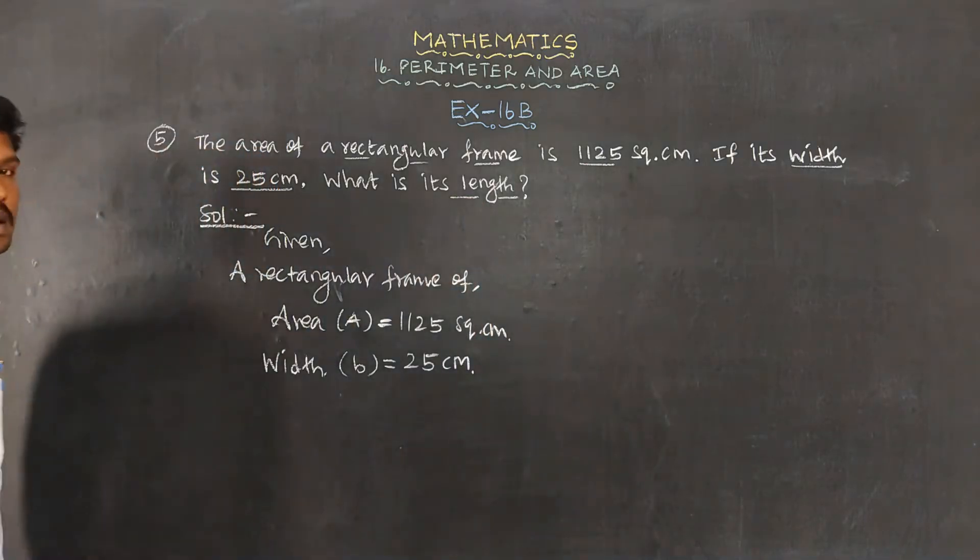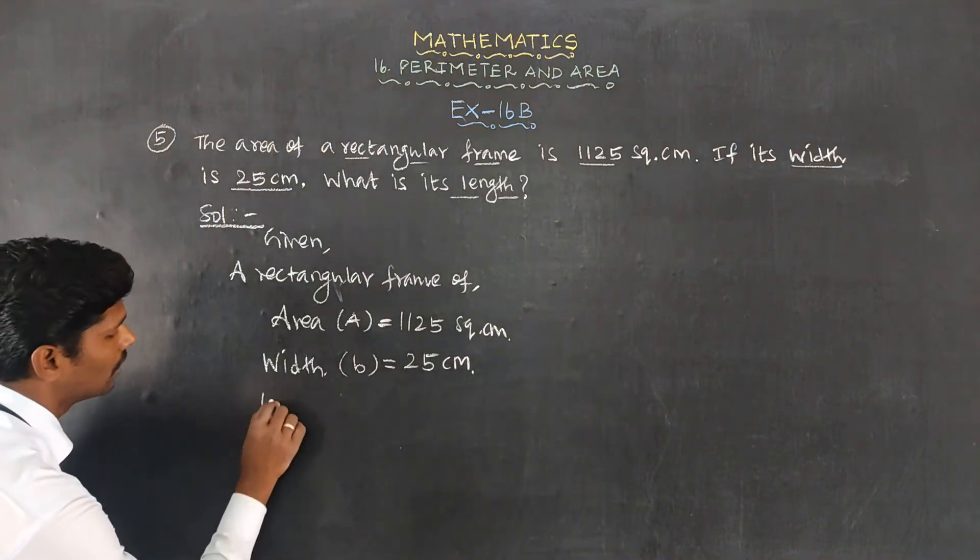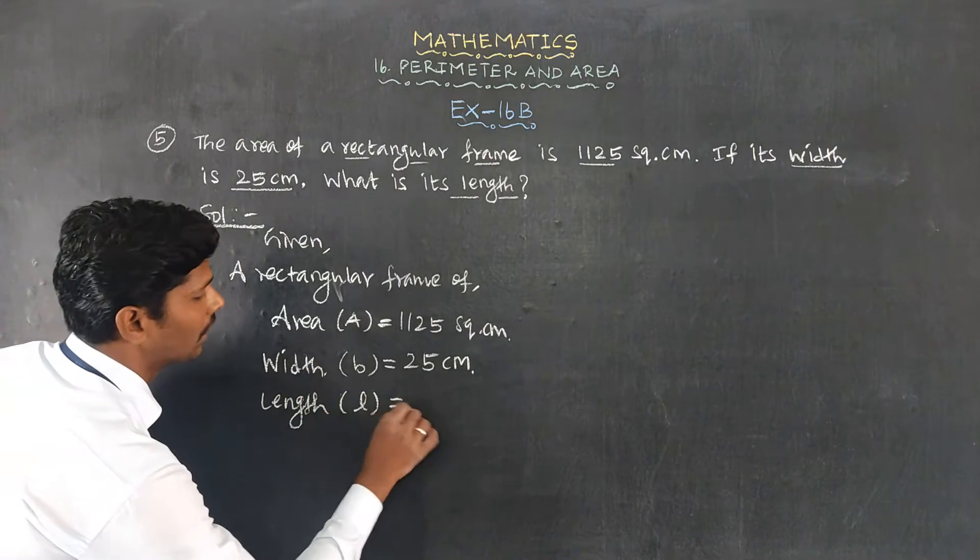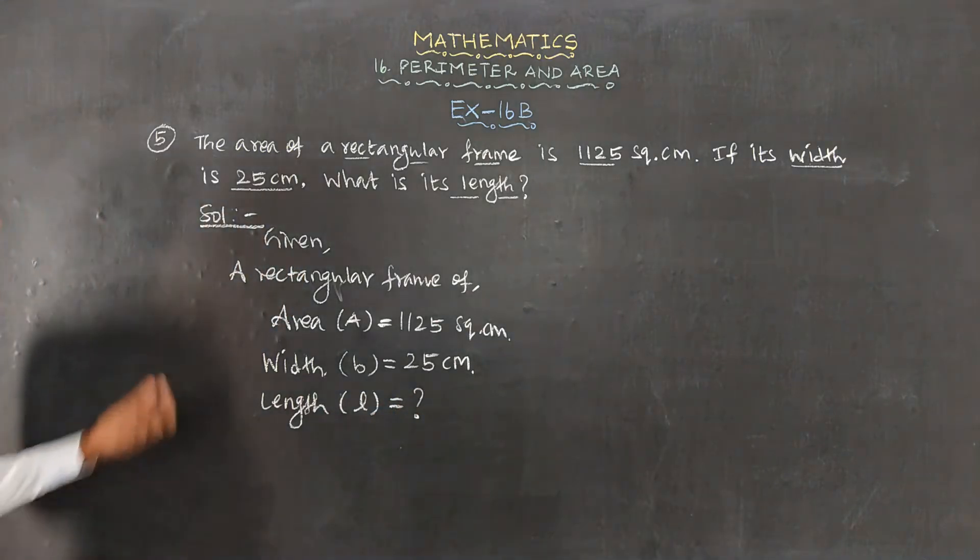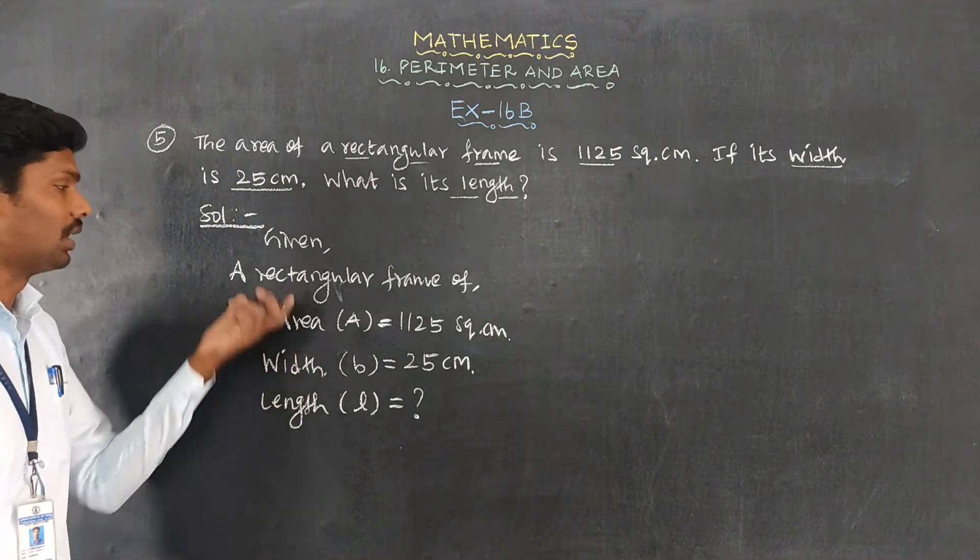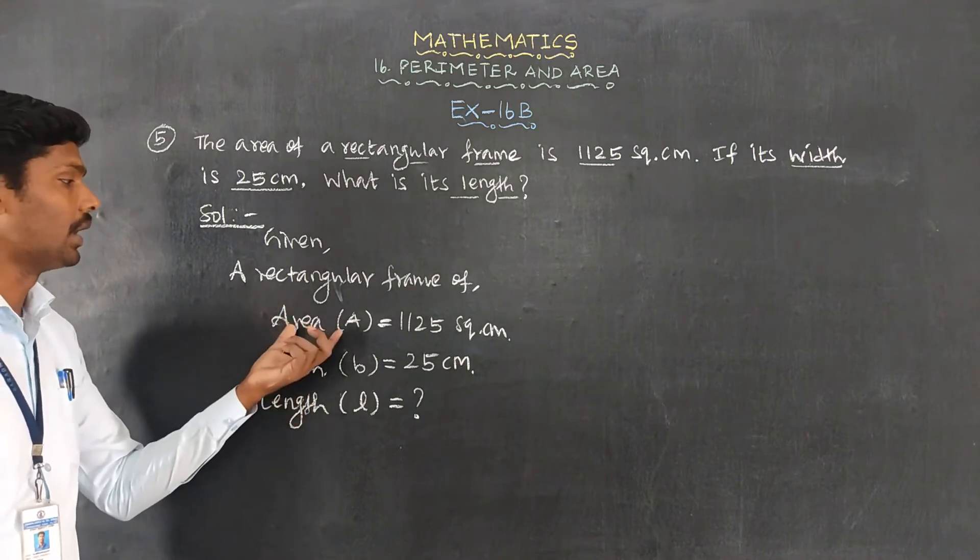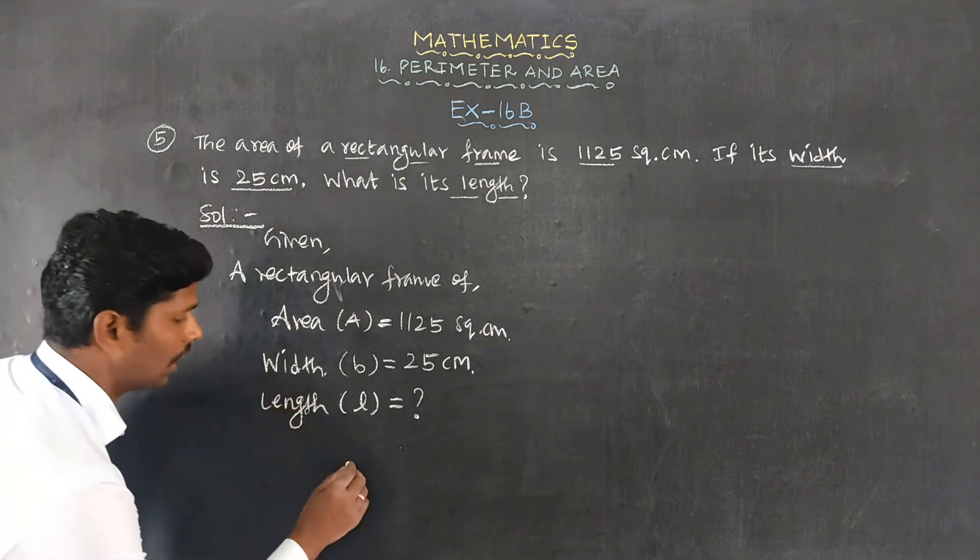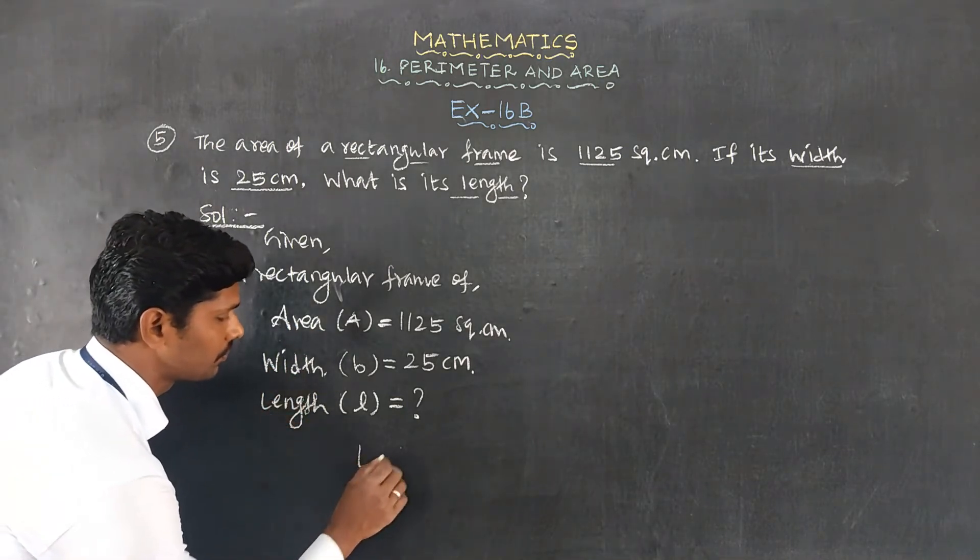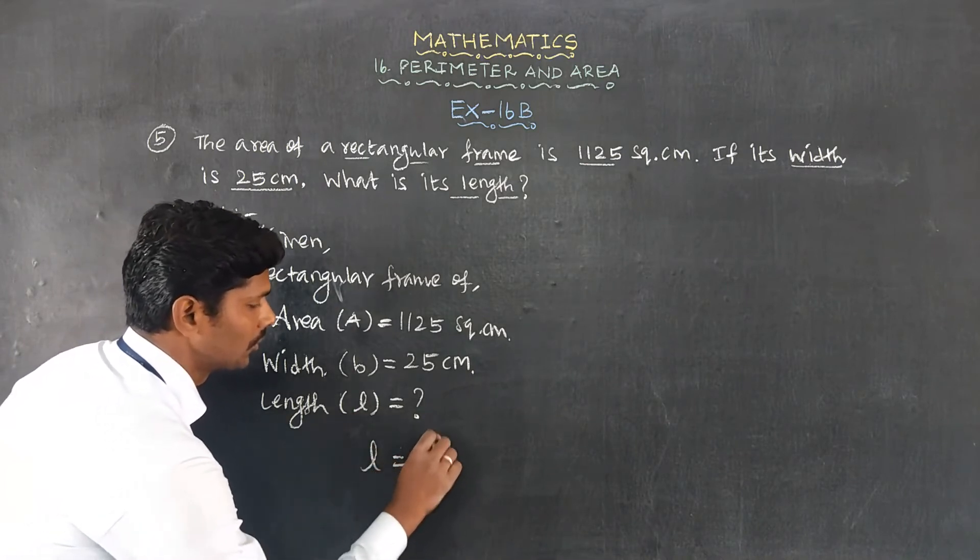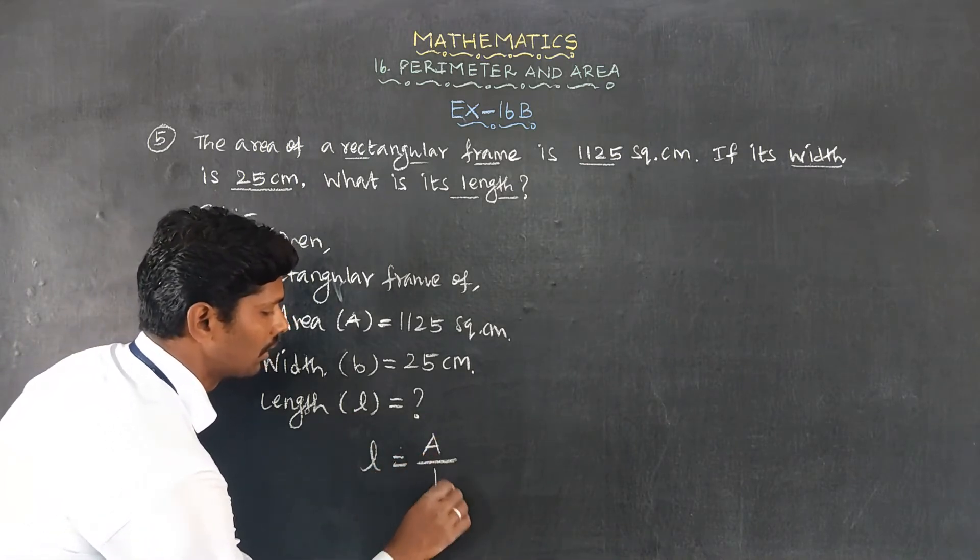What is its length? Length L is what we need to find. We know that length of rectangle equals area of rectangle divided by breadth of rectangle. Length L equals area divided by breadth.